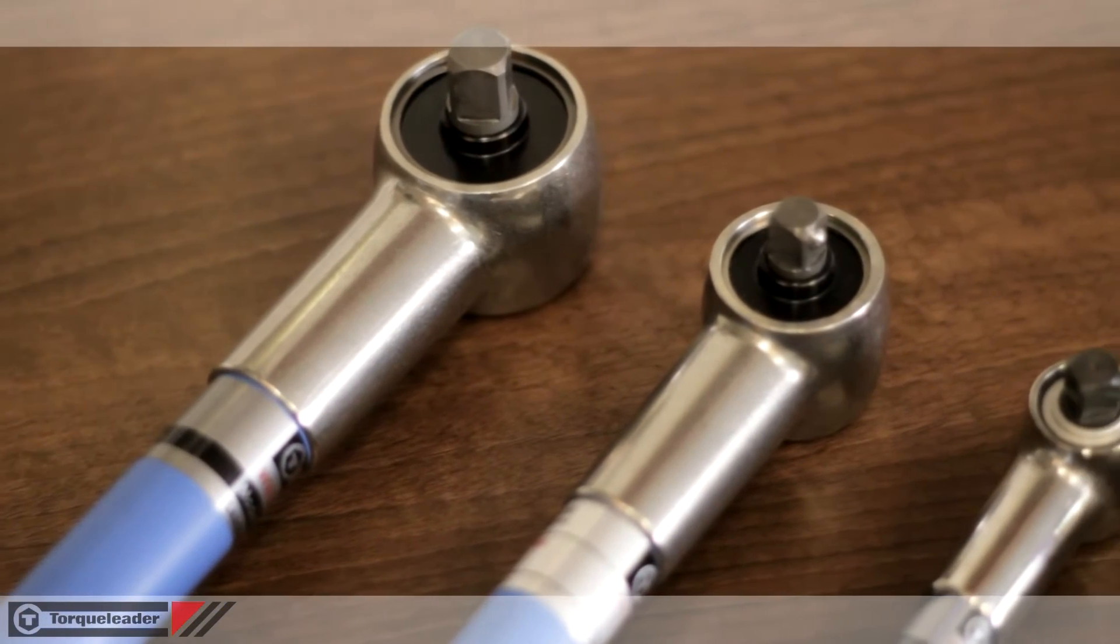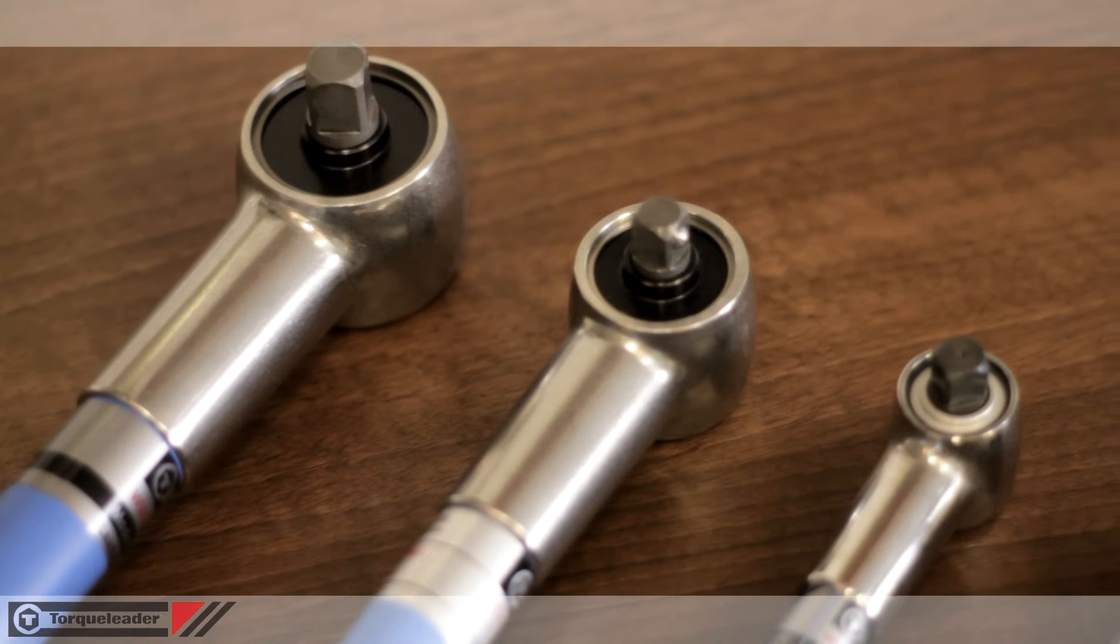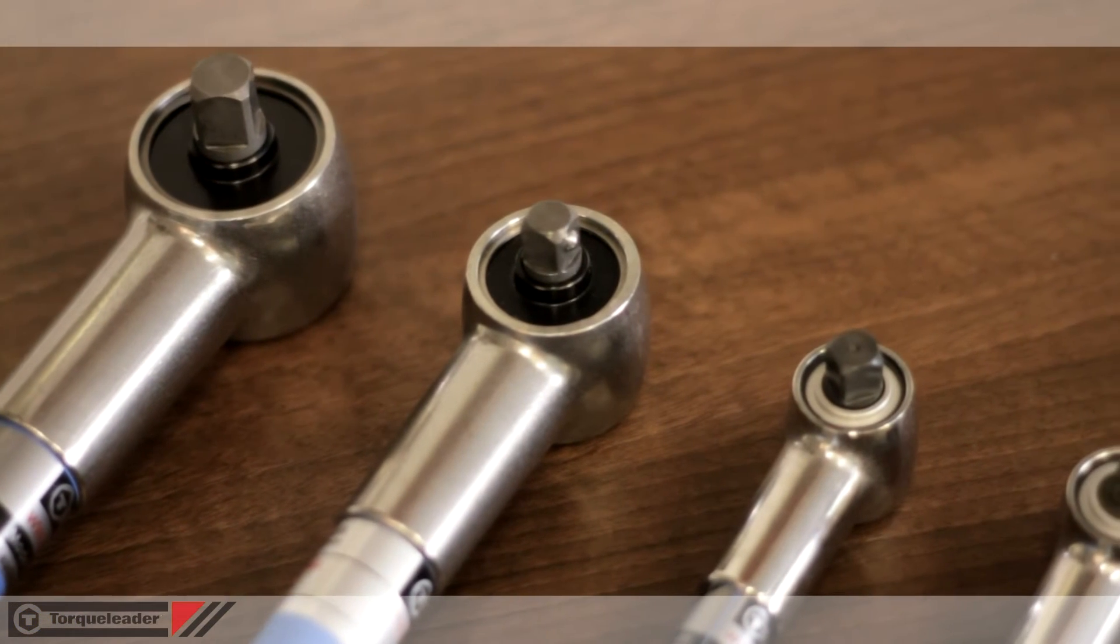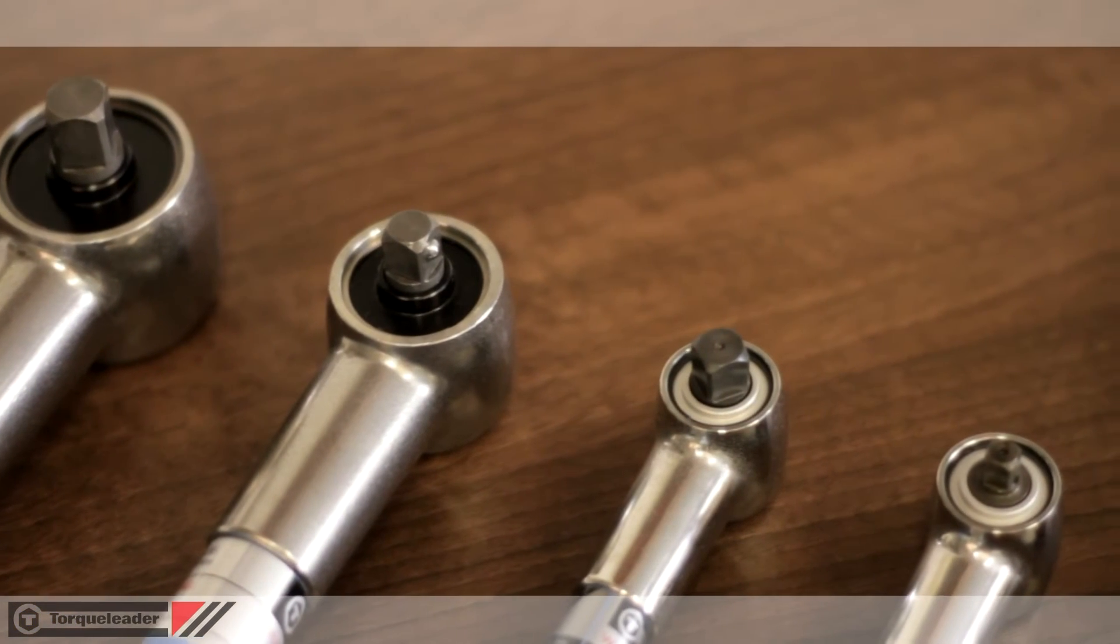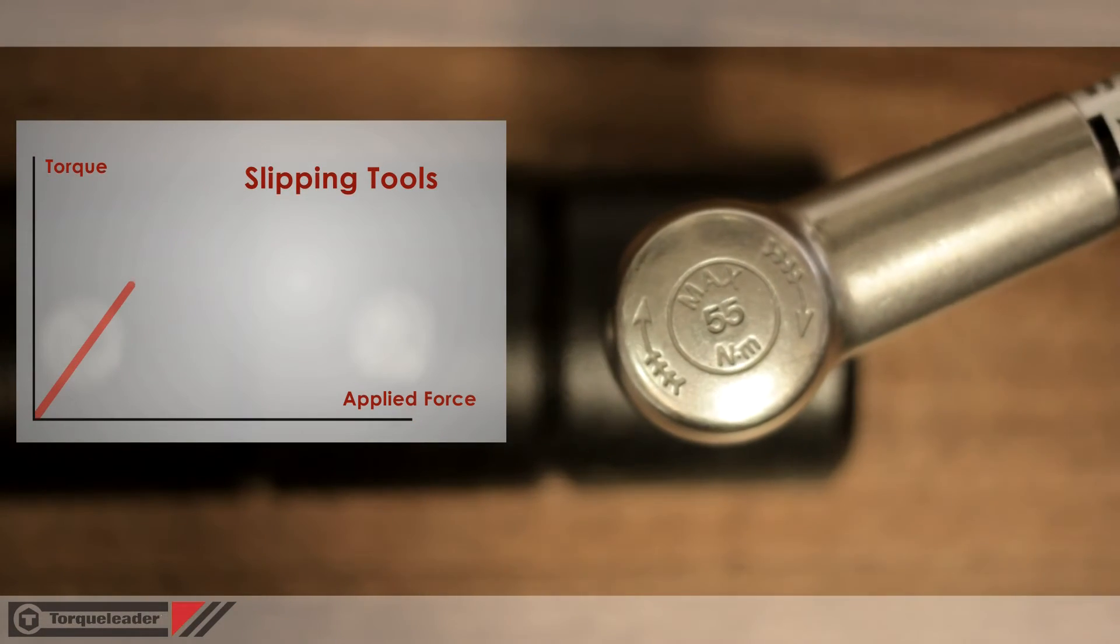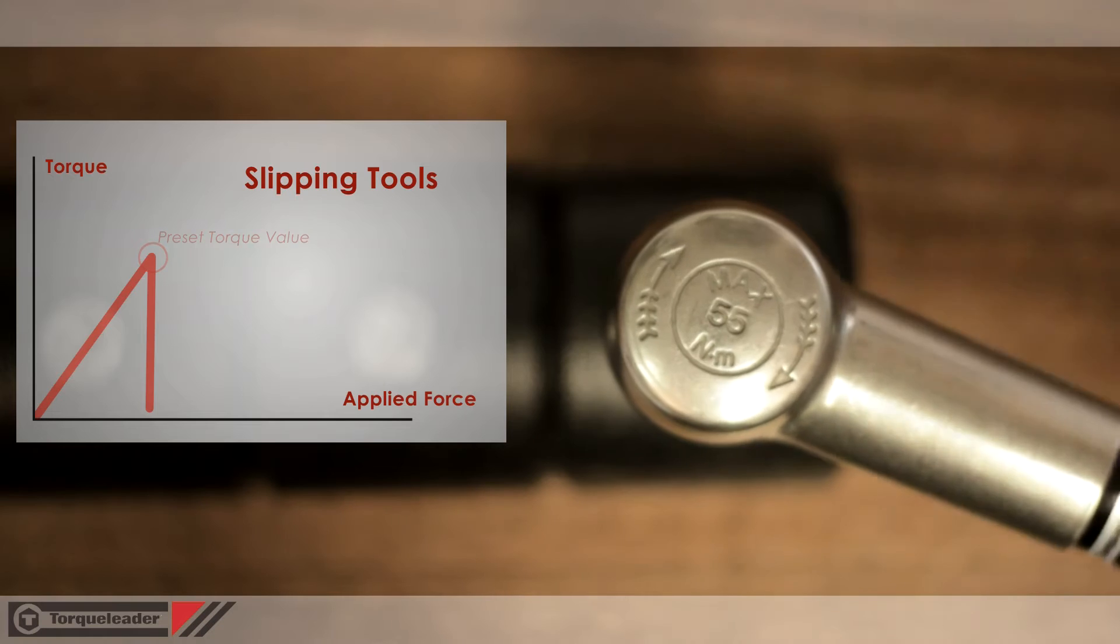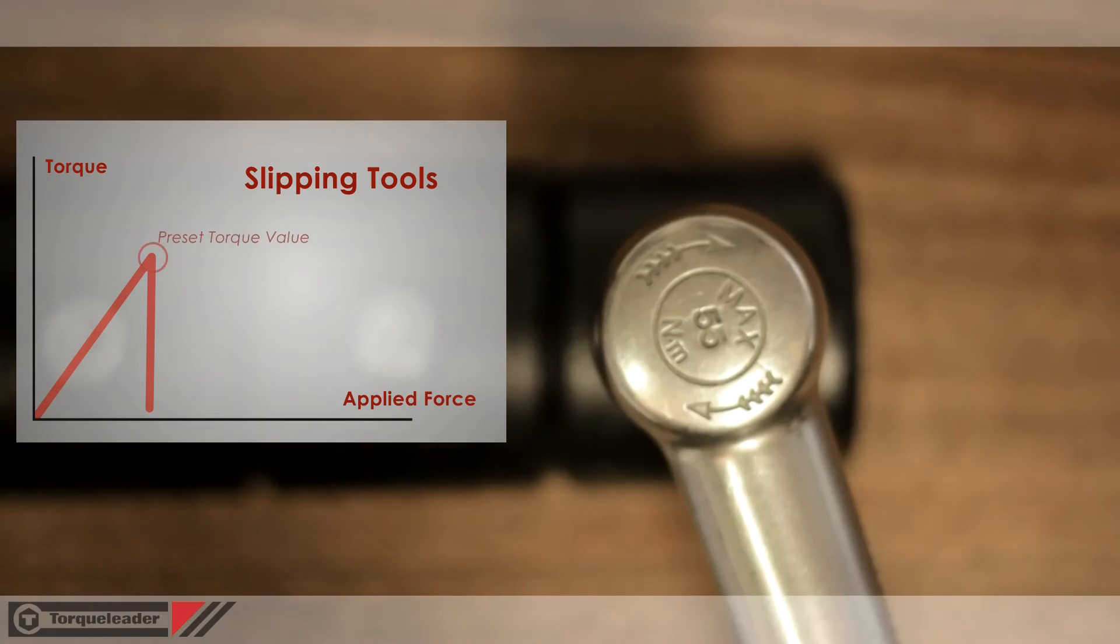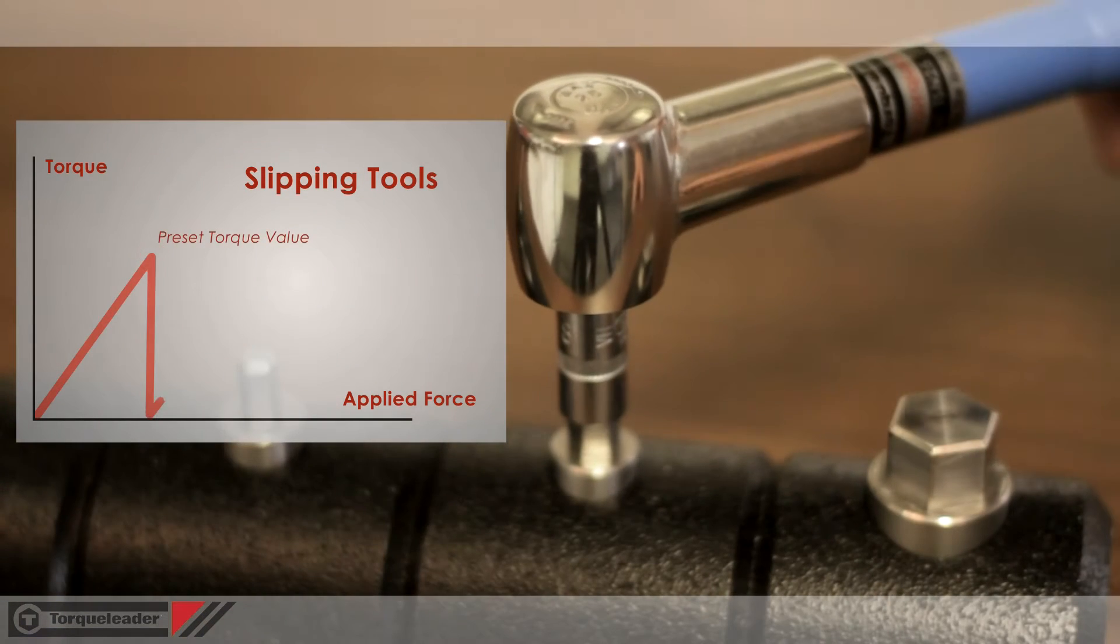Torque leader slipping wrenches are the only torque wrenches that guarantee to deliver the set torque to the bolt without operator influence. When the set torque is achieved, the mechanism slips free through an angle of 40 degrees and automatically resets ready for the next fastener.